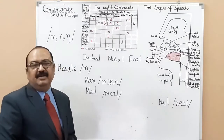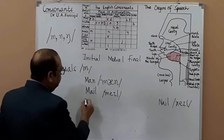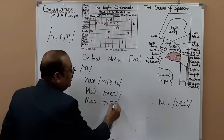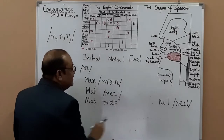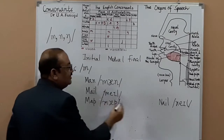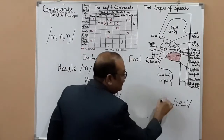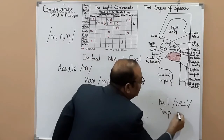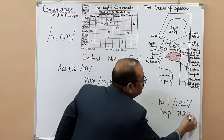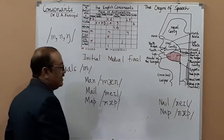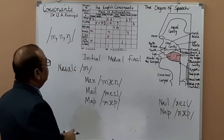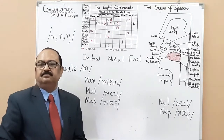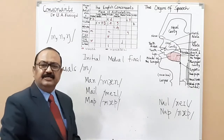For /m/ you may also have 'map' — and a rhyming word with that is 'snap'. So 'map' and 'snap' — this is how you write 'map'.